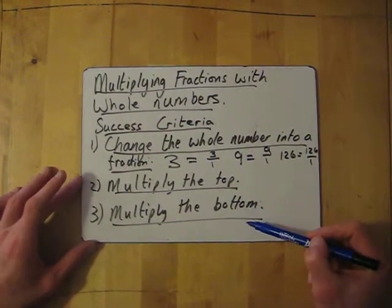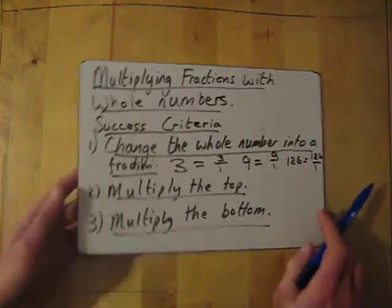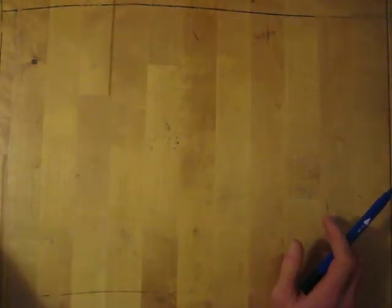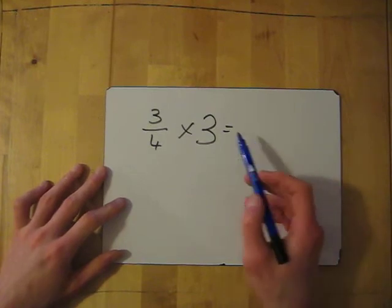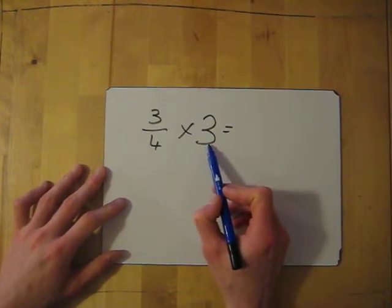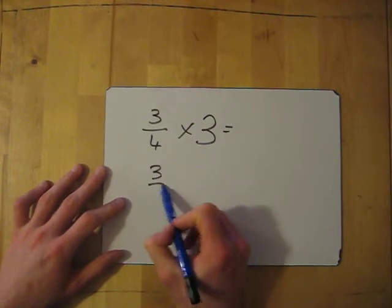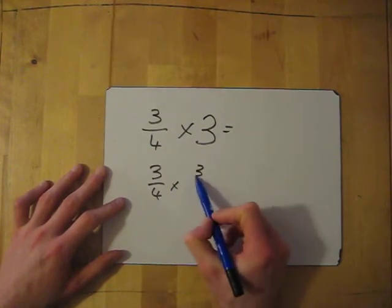And after you've done that, multiply the top, multiply the bottom, and I'll show you what I mean by that. So we've got 3/4 times 3. So all I'm going to do is turn this into a fraction, so you put it 3 over 1. So the question actually is this.